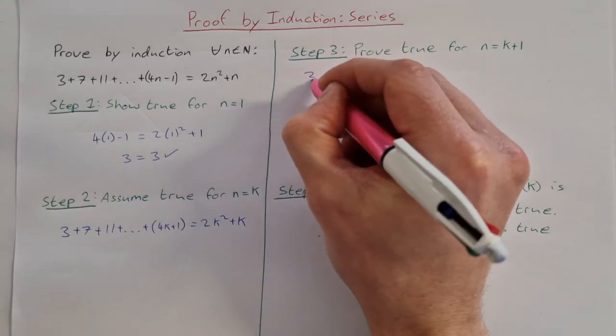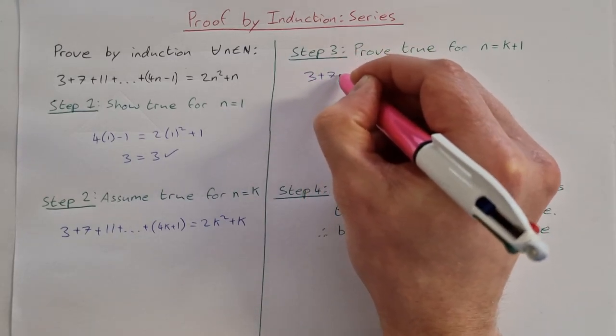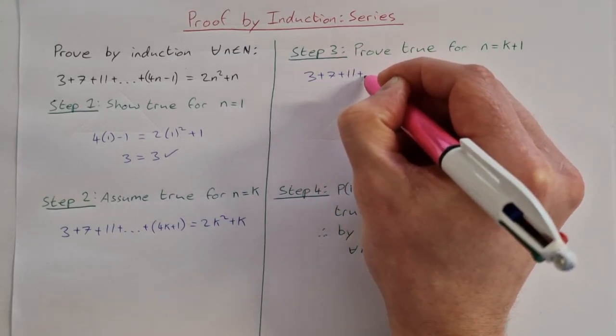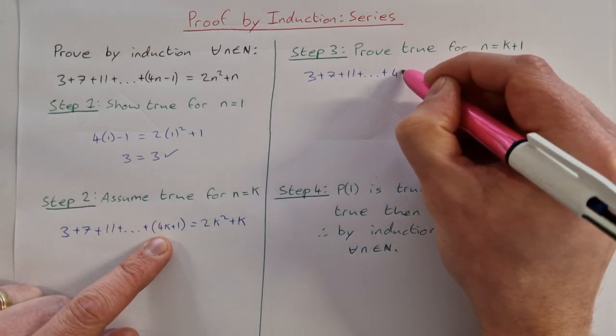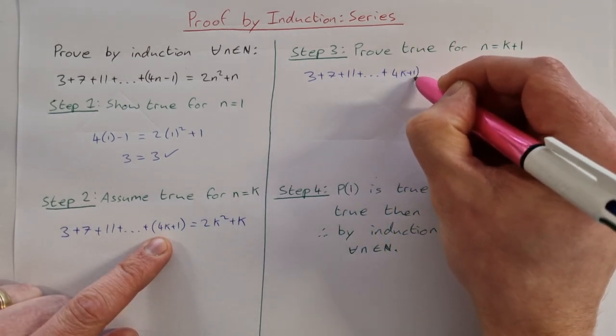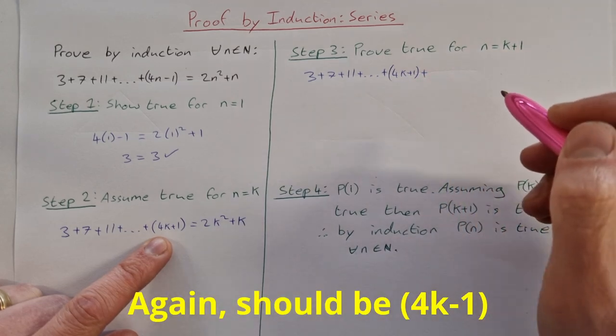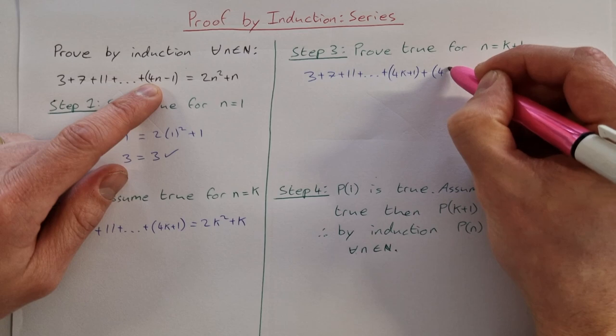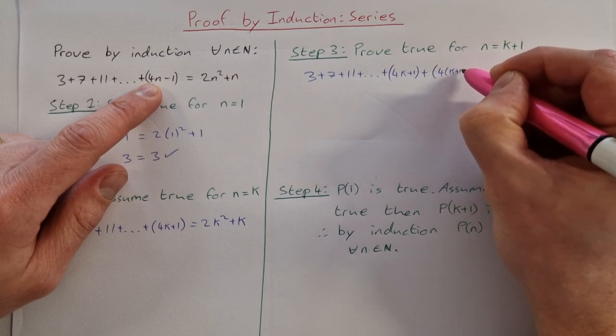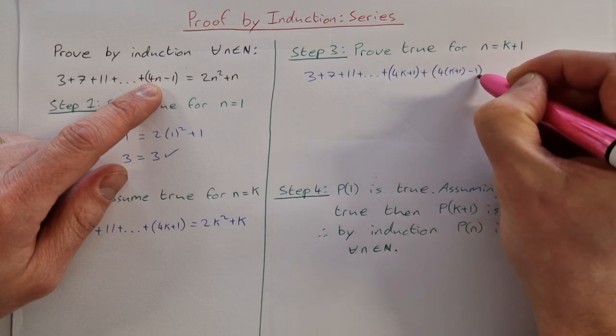So we have 3 plus 7 plus 11 plus up as far as this term which is 4k minus 1, and then we have our next term which is this with k plus 1 instead of n, so that's going to be plus 4 times (k plus 1) minus 1.